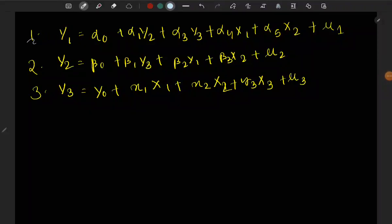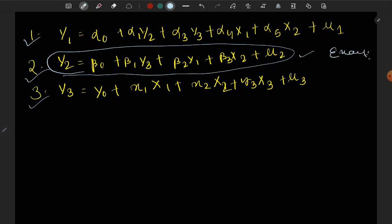Hey guys, from these three equations we have to find out which equation is exactly identified, over-identified, or under-identified. This is an econometrics model question where we need to determine the identification status of the equation.